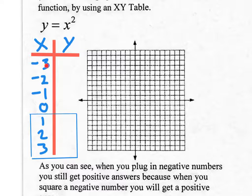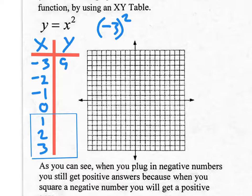The input values are the x values, and we're going to plug them into the function y equals x squared. If I plug in negative 3, remember it goes in parentheses — negative 3 squared equals positive 9. Negative 2 squared is positive 4. Negative 1 squared is positive 1.